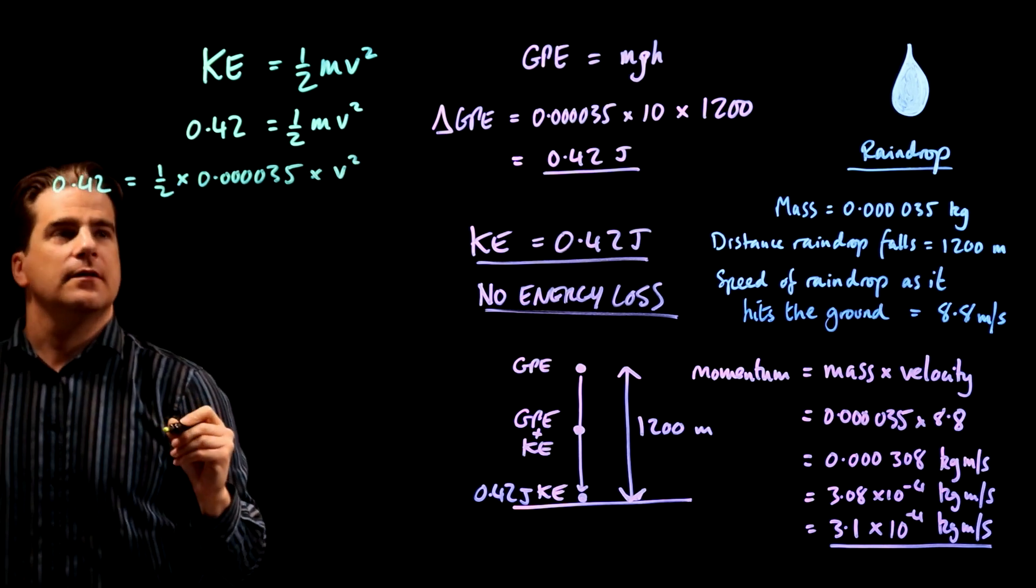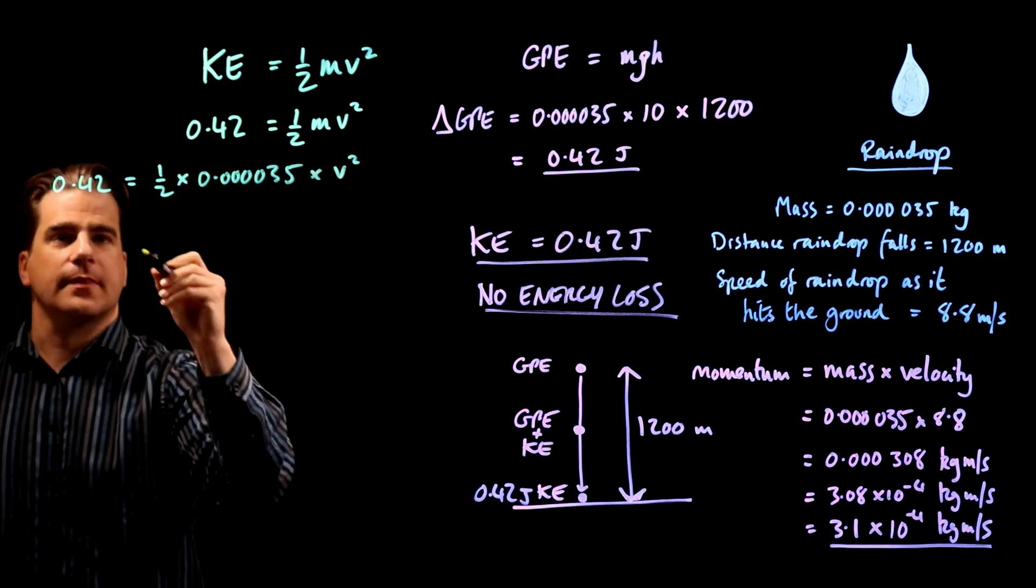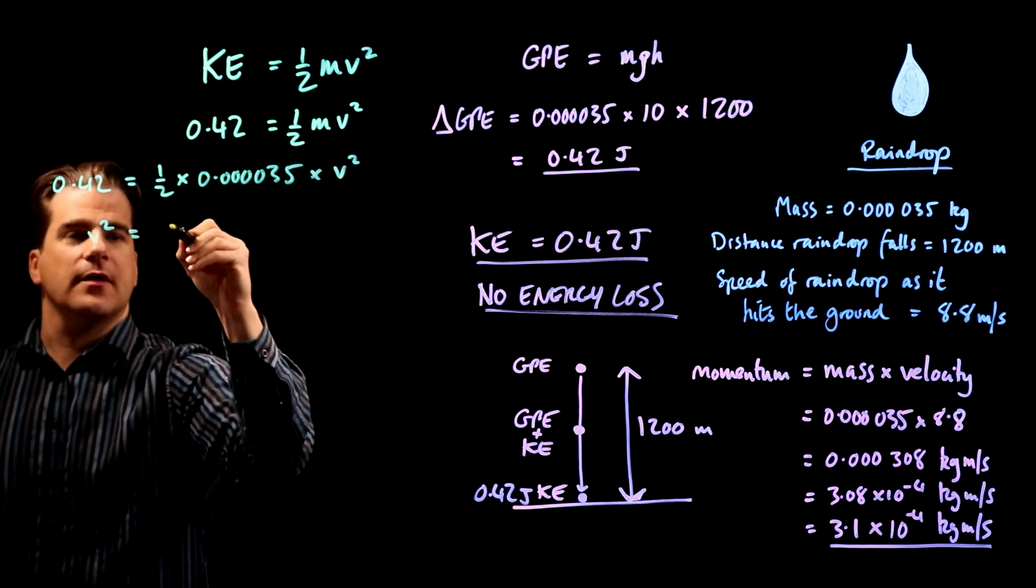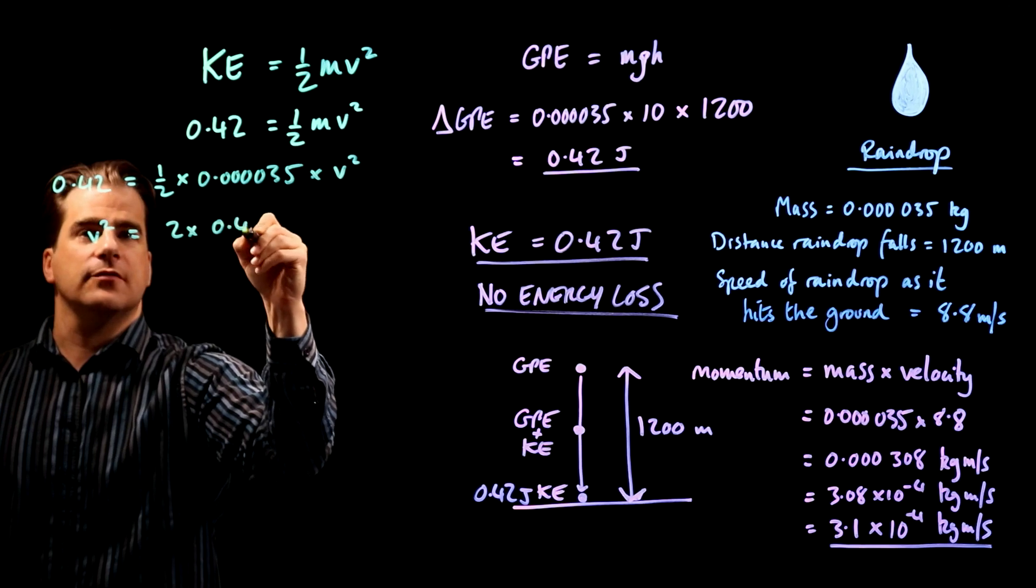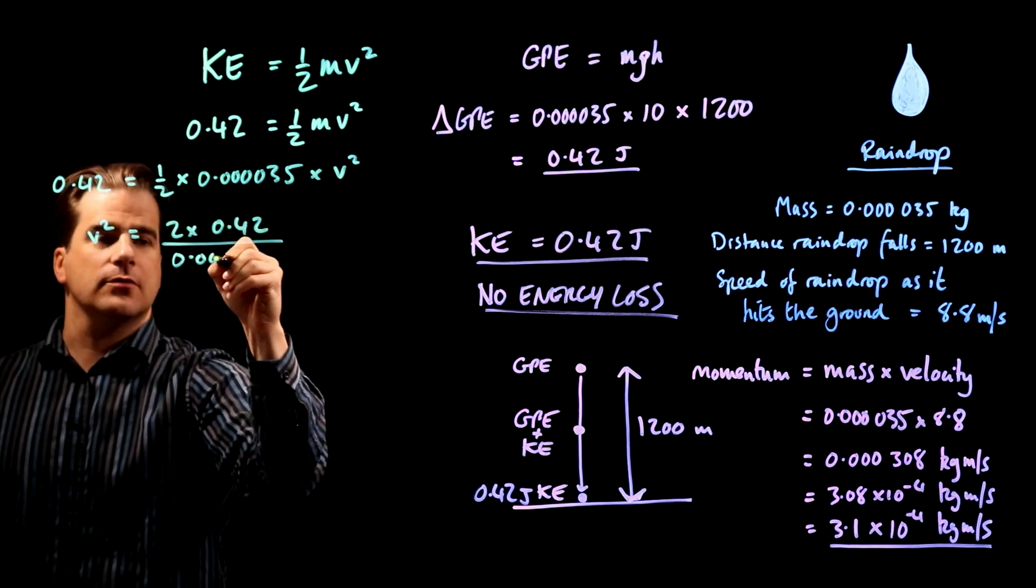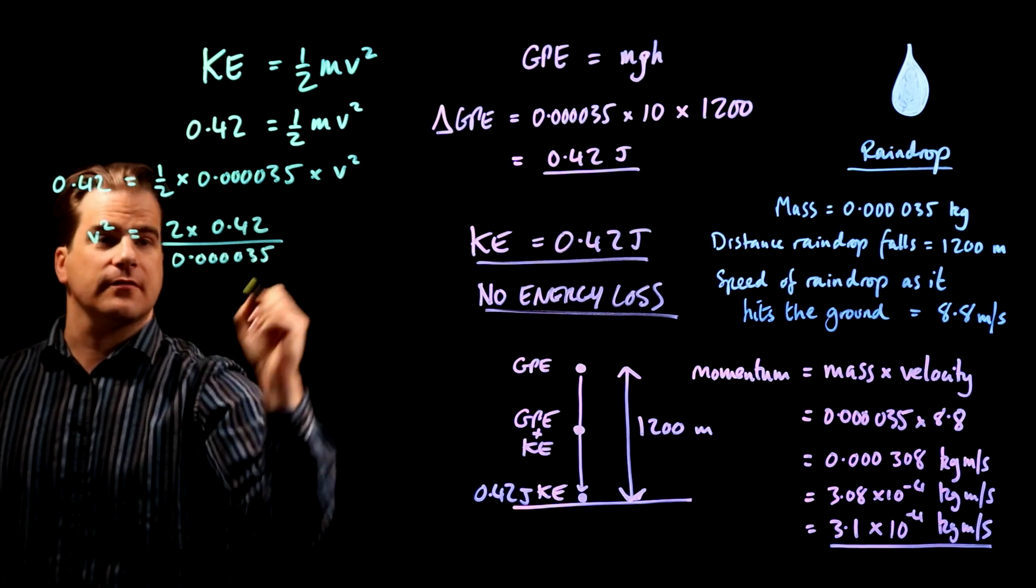So, with no energy losses, the previous question, we've just stated the kinetic energy would be 0.42 joules, okay? So, we've got 0.42 is equal to the half mv squared, right? But, we know the mass. So, 0.42 would be equal to half times the mass is 0.00035 times v squared, okay? Rearrange that,